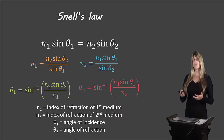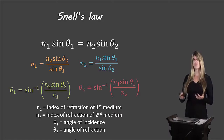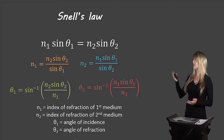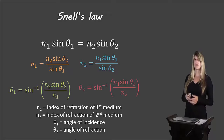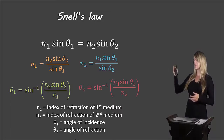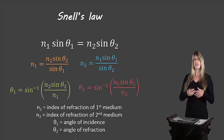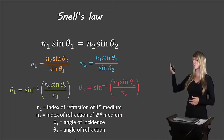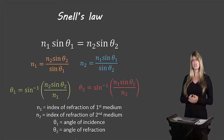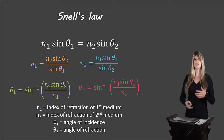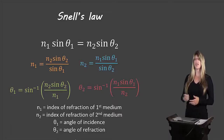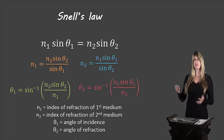In order to use Snell's Law, you need to isolate each variable depending on what the question asks. For example, if the question asks you to solve for the index of refraction in the first medium, you would rearrange the equation like the orange one shown there. I've rearranged the equation in each of the four ways you'll need. If you're good at rearranging equations, just memorize the white equation and rearrange each time. If you struggle with rearranging, you may want to memorize those four rearranged equations instead.